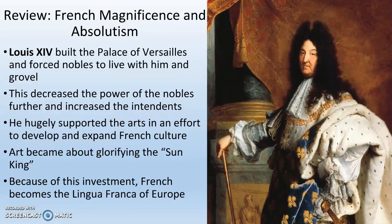After his death, his descendants, including Louis XVI, continued to bring all the power to themselves so that no one else has anything. The bourgeoisie don't have power. The nobles don't have power. The military doesn't have power. Just the king. And this is ultimately going to be a problem as people begin reading the books of the Enlightenment.